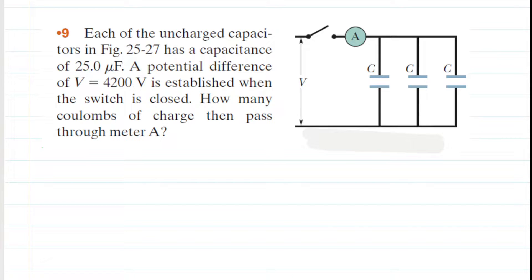You might want to pause the video and reread the problem before listening on. We have some uncharged capacitors, each of which has a capacitance of 25 microfarads. A potential difference of 4200 volts is established when the switch is closed. We need to figure out how many coulombs of charge pass through meter A.